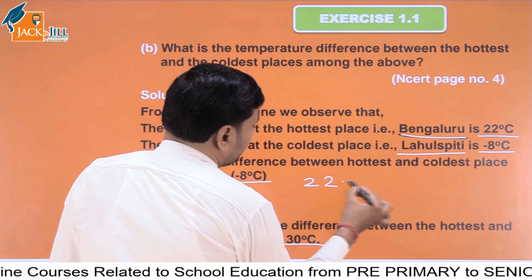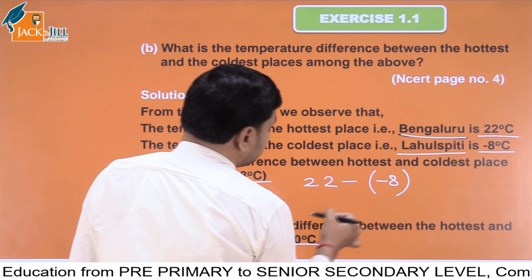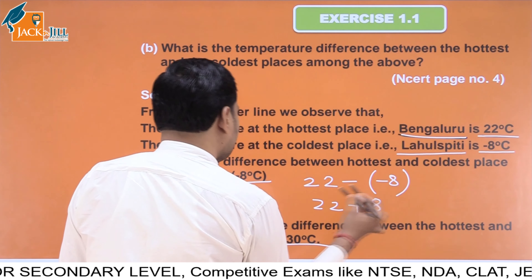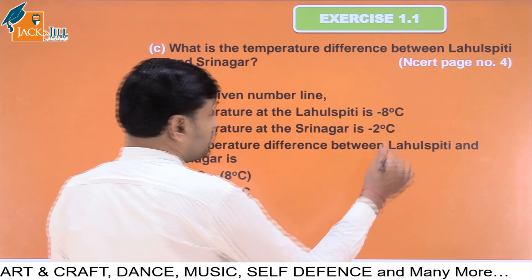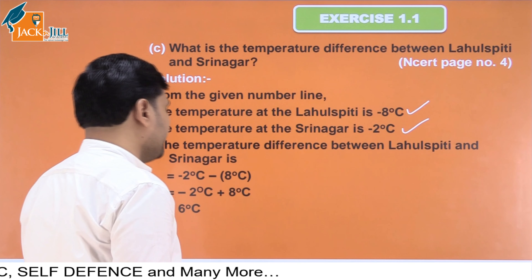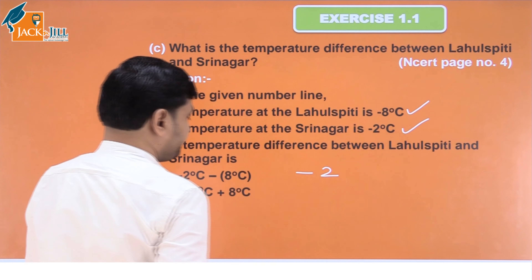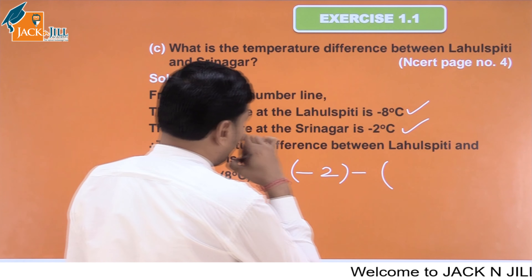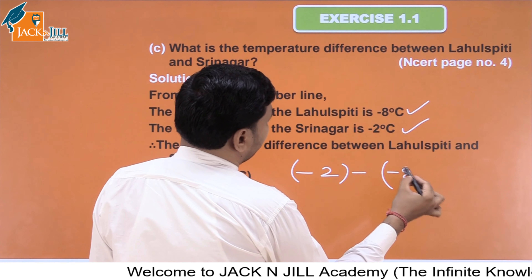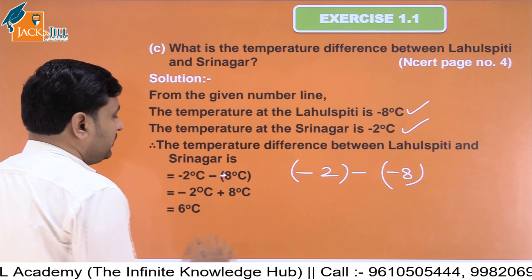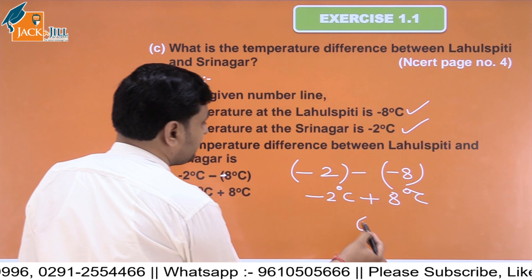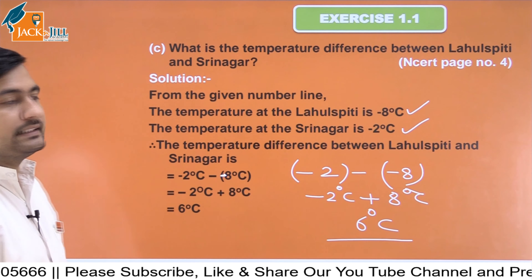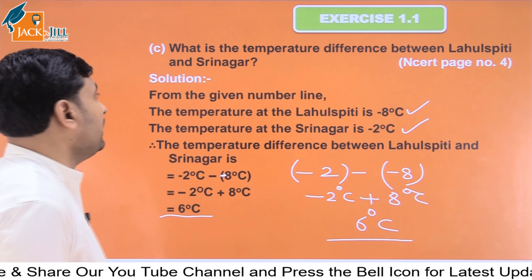Leh is minus 8 and Srinagar is minus 2. The difference between them is minus 2 minus minus 8, which equals minus 2 plus 8, giving us 6 degree Celsius. So the difference between Leh and Srinagar is 6 degree Celsius.